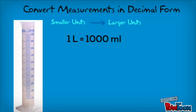When looking at this cylinder here, we can see that it is labeled in milliliters. If we were to fill this cylinder with water to the top, we would have 1000 milliliters of water. Since 1000 milliliters is equal to 1 liter, we could also say that we have 1 liter of water.